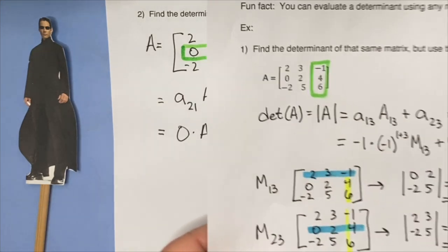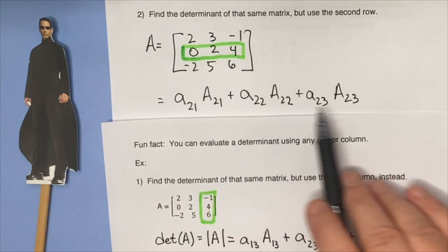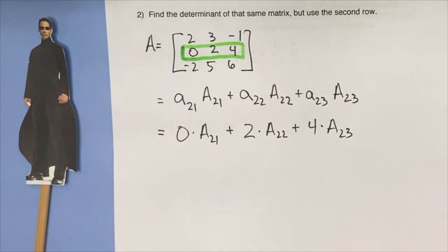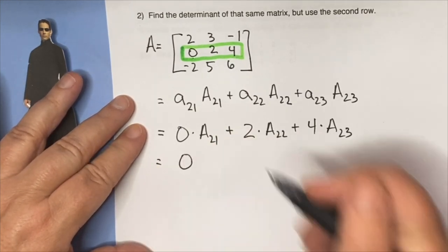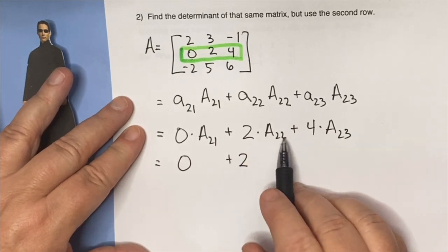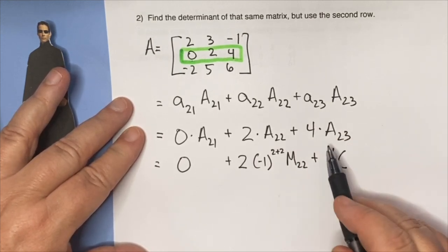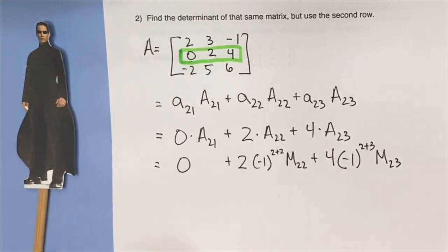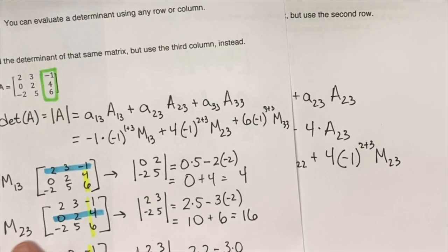I also notice I've already calculated A(2,3)'s cofactor — I already know the minor at (2,3) is 16. Also, why is this really convenient? What is zero times a number? Zero. So we don't have to worry about A(2,1) at all. So A(2,2) contributes negative 1 to the 2+2 times the minor at (2,2), and 4 times A(2,3) contributes negative 1 to the 2+3 times the minor at (2,3). The minor at (2,3) is 16 — I'm not going to recalculate it.